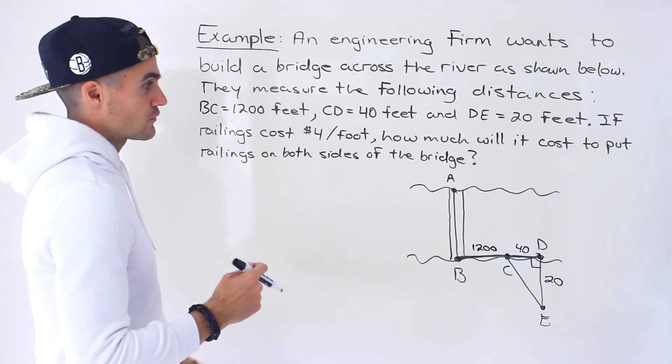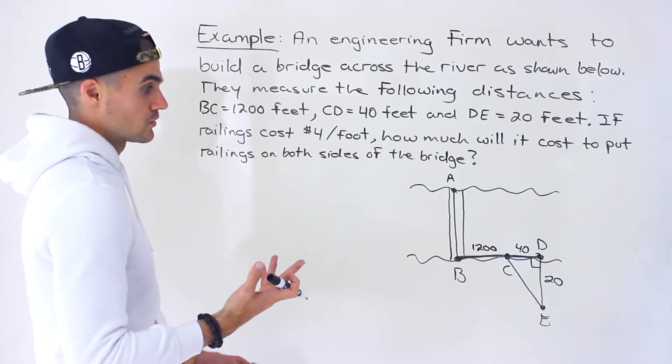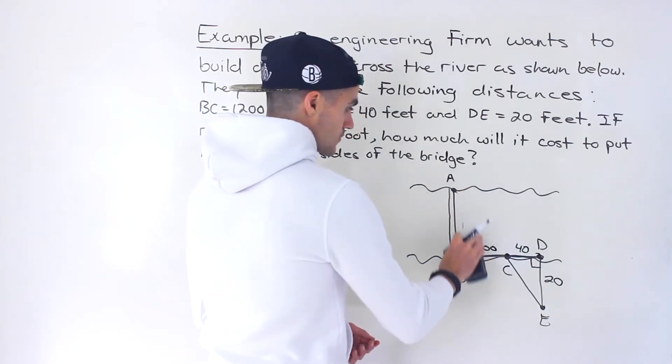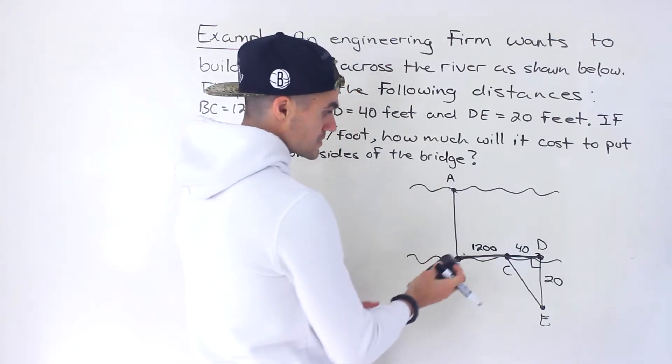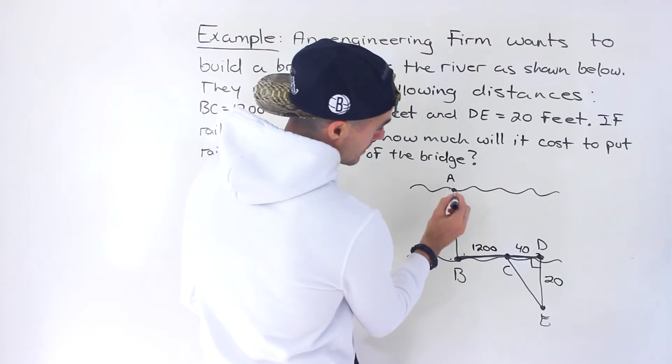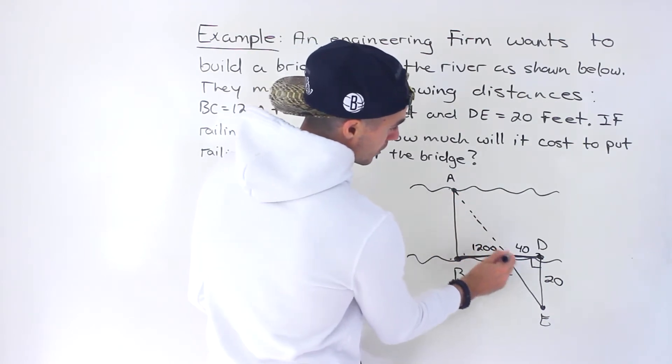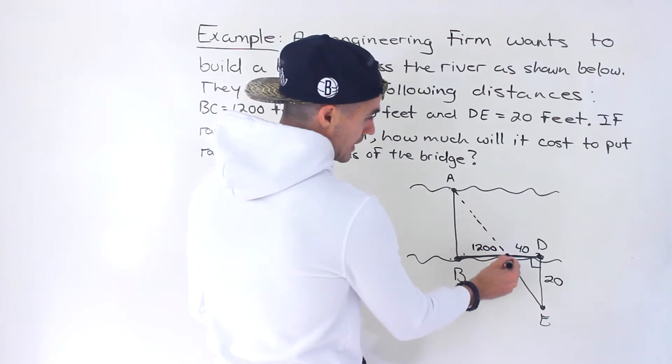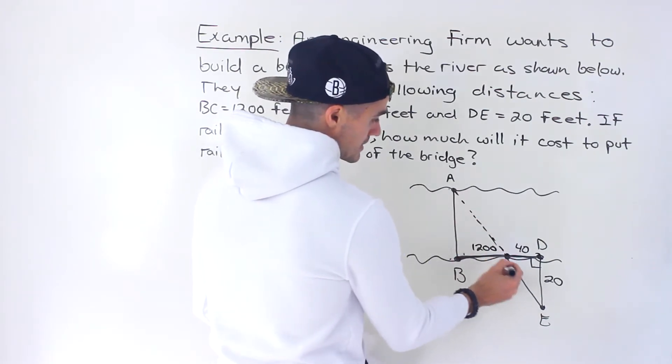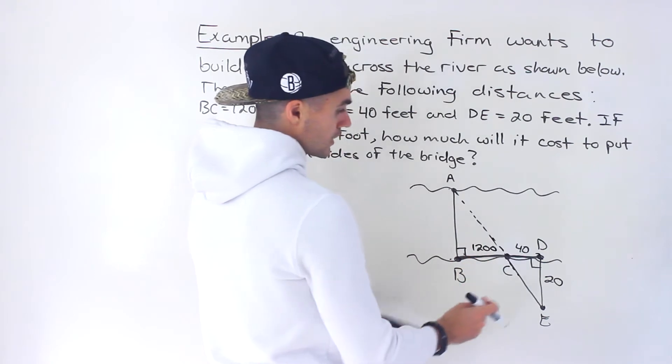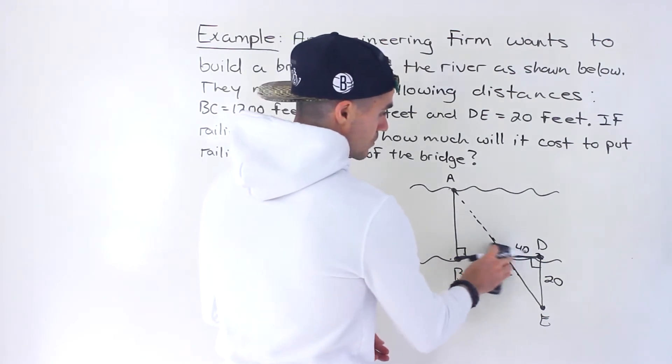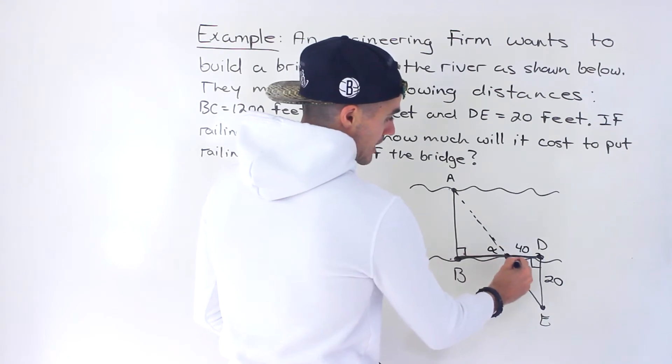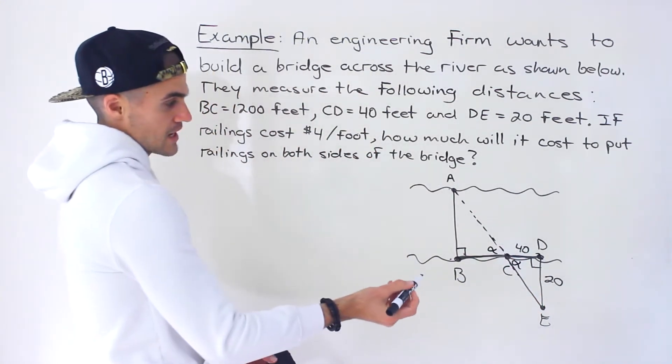We have to find out how much it's going to cost. Notice we can actually set up similar triangles here because we have a triangle right over here. This line continues and extends to this line, and this is a 90 degree triangle, and this is also a 90 degree triangle.